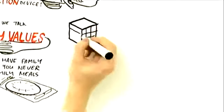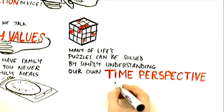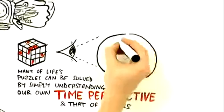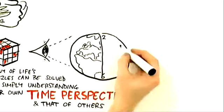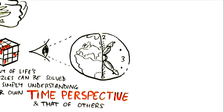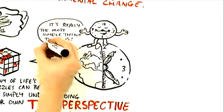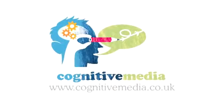I think many of life's puzzles can be solved by simply understanding our own time perspective and that of others. Lots of conflict we have with people is really a conflict in different time perspectives. Once you're aware of that, you stop making negative attributions like you're dumb or you're childish or you're pig-headed or you're authoritarian. It's really the most simple idea in the world.